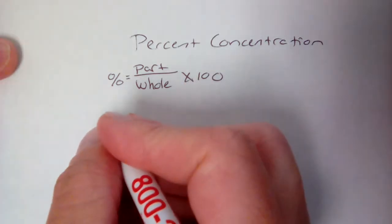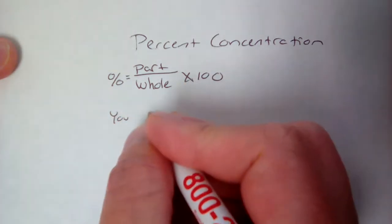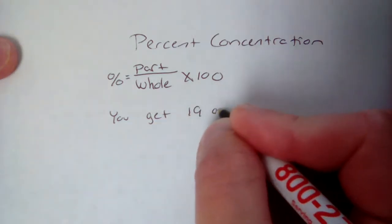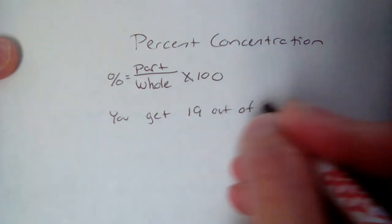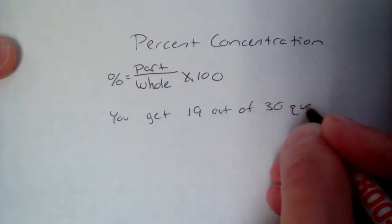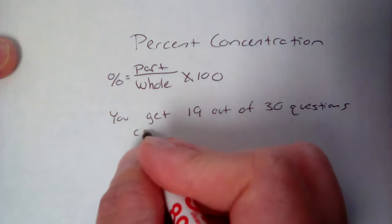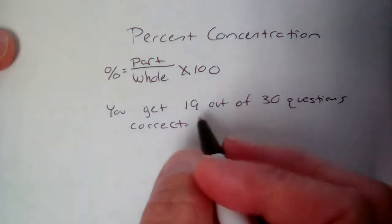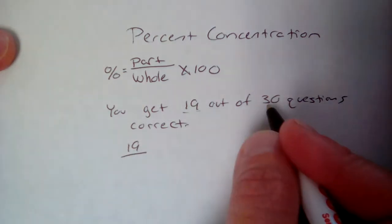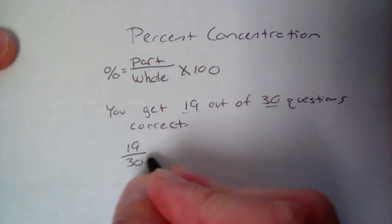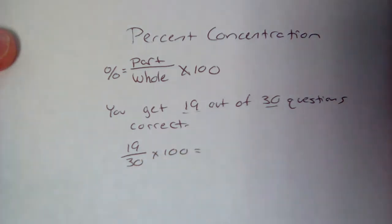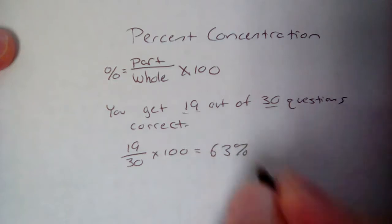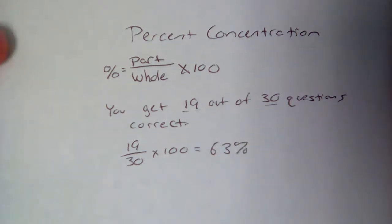Let's say you get 19 out of 30 questions correct. Well, to find your percent on that test, you would take the part, the 19, divided by the whole, the total number of questions, times 100. So 19 divided by 30 times 100, you have gotten a 63 percent.